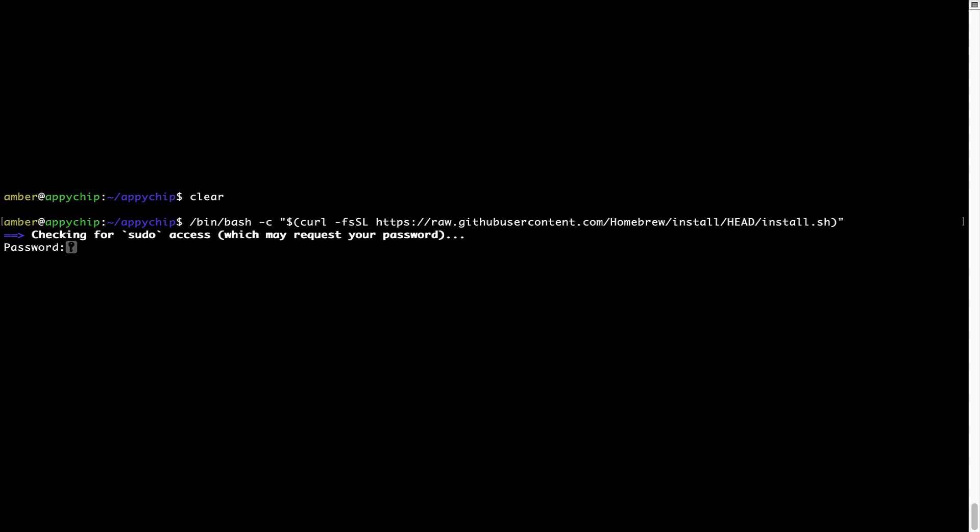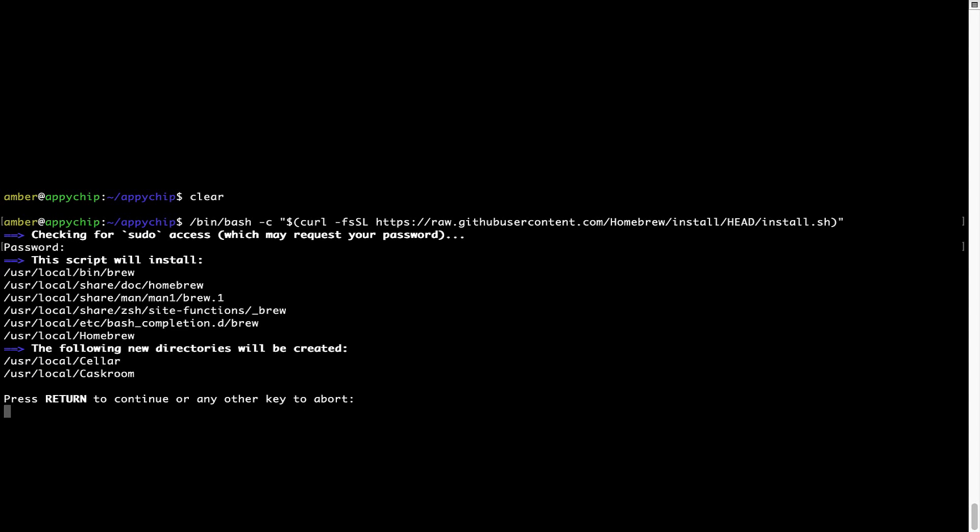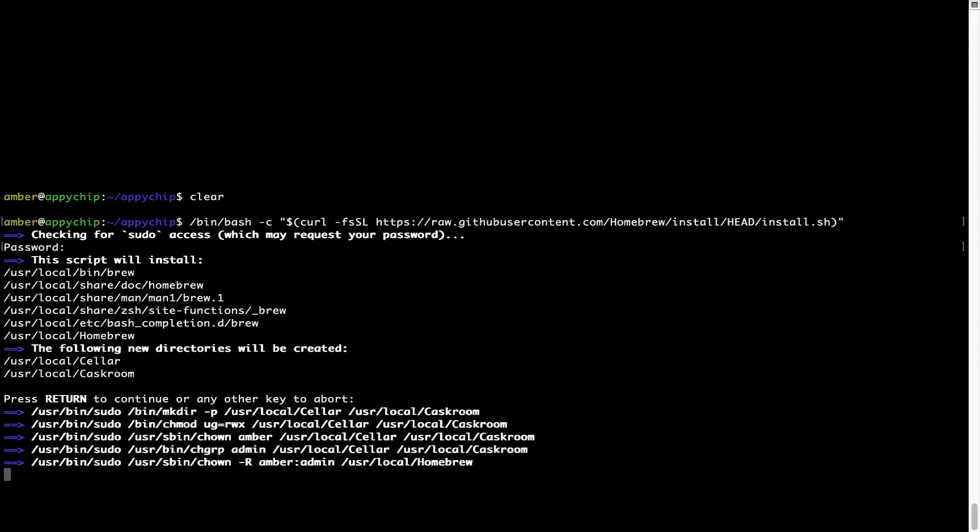Now it is prompting me to enter my user's password on Mac. I am going to type the password now, but it won't be visible on your terminal. Once we have entered the password, simply press Enter, and if the password is correct, the script will continue. Now it is saying press Return to continue the installation. I'll press Enter here, and this will start the installation of homebrew on my Mac.